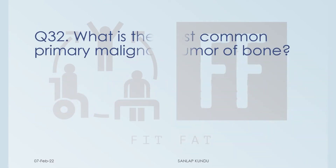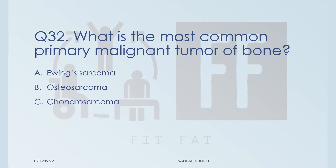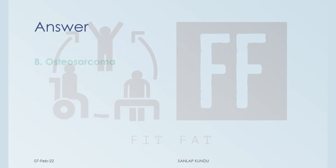Question number 32: what is the most common primary malignant tumor of bone? Options are: A) Ewing sarcoma, B) osteosarcoma, C) chondrosarcoma, and D) GCT. The correct answer is option B, osteosarcoma.